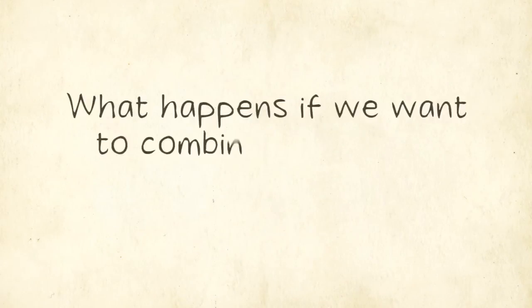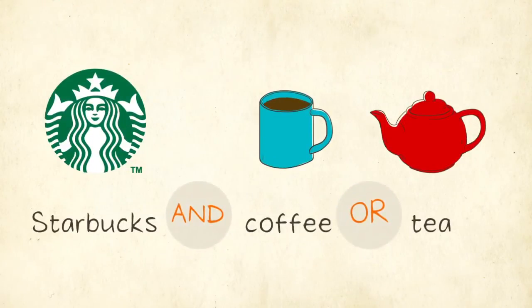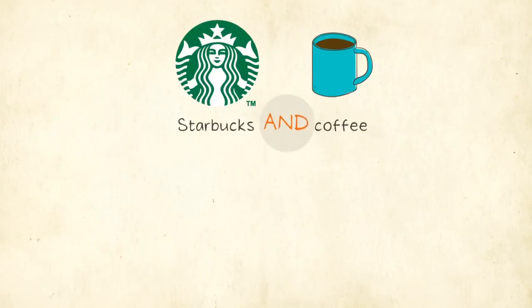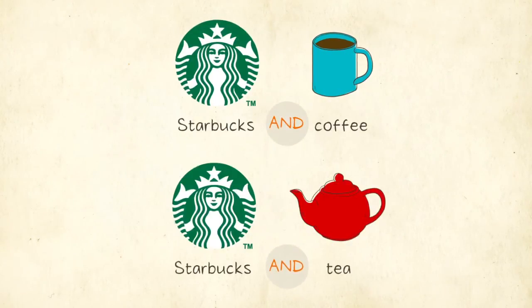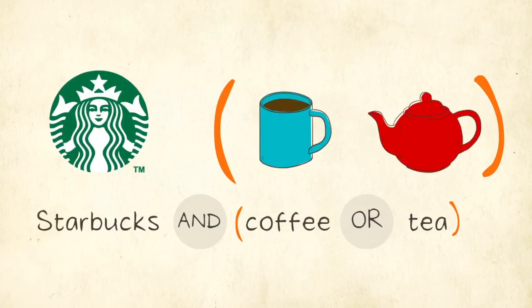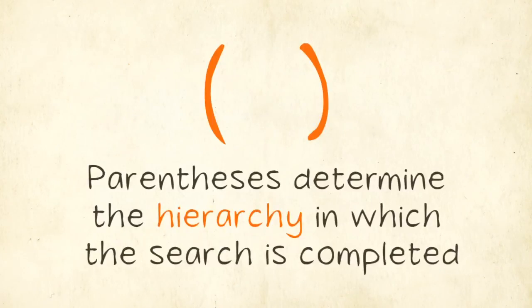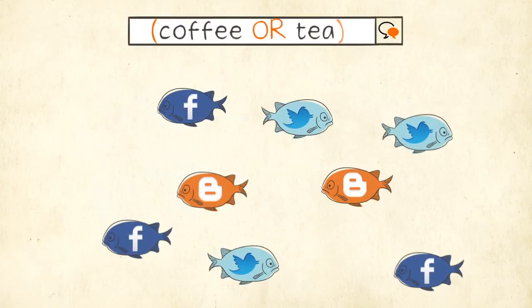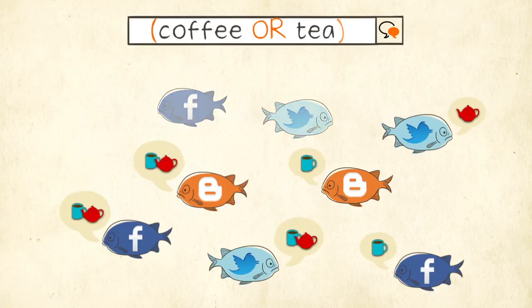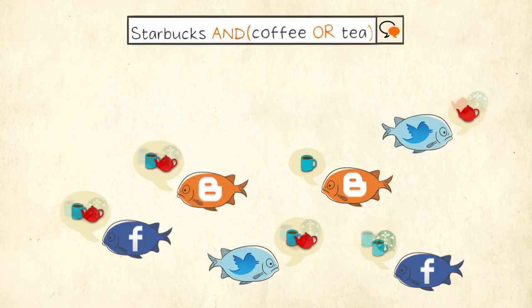Finally, what happens if we want to combine the use of two or more operators? For instance, what if we'd like to see any mentions of Starbucks AND coffee OR tea? You could enter two separate searches — one for Starbucks AND coffee, and another for Starbucks AND tea. An even better solution is to use parentheses to combine both searches into one. Parentheses determine the hierarchy in which the search is completed. By enclosing coffee OR tea in parentheses, the search first looks for any conversations that include either of those terms, then looks only through those results to find any that also contain the word Starbucks.